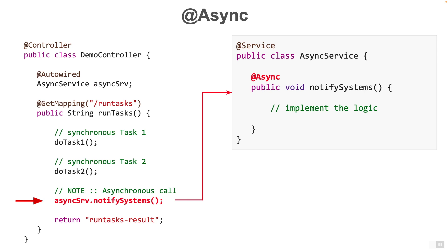Now don't think about this call as a simple method call. The @Async annotation on that method does some magic behind the scenes. Spring Boot introduces a proxy in the middle, and when asyncServe.notifySystems is called, the Spring Boot proxy will make sure that the code is actually executed on a different thread, but the proxy method will immediately return, making it asynchronous.